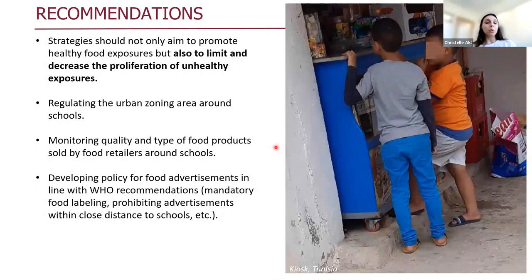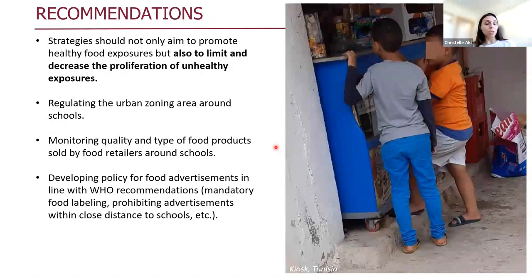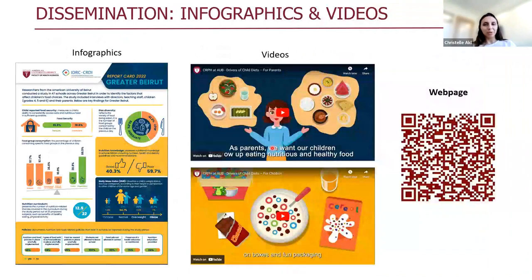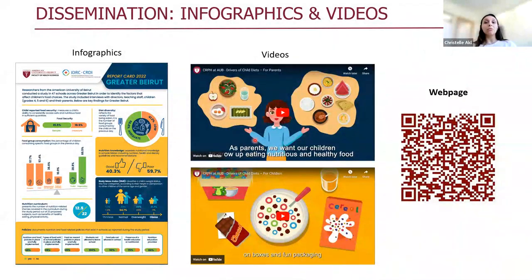Recommendations include regulating the urban food environment area around schools, monitoring the quality and type of food products sold by retailers around schools, and since we found a predominance of unhealthy food advertising, we should develop policies for food advertising in line with recent WHO recommendations — including mandatory food labeling and prohibiting advertisements in close proximity to schools. Finally, we developed research outputs shared with school staff, parents, and children, including infographics and videos. Links to all these materials can be found on the project webpage — you can scan the QR code to go directly to the project website. These videos use the findings of this component to increase awareness among parents and children regarding unhealthy food exposure and provide advice on how to avoid some of these exposures.